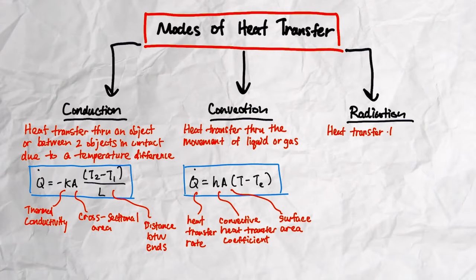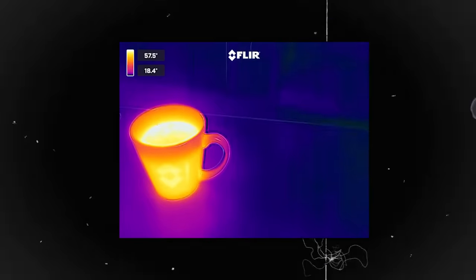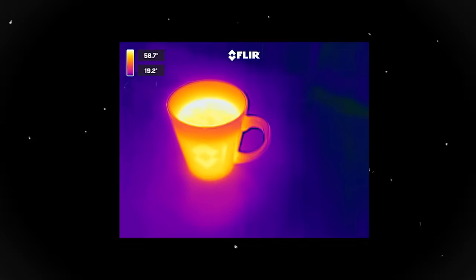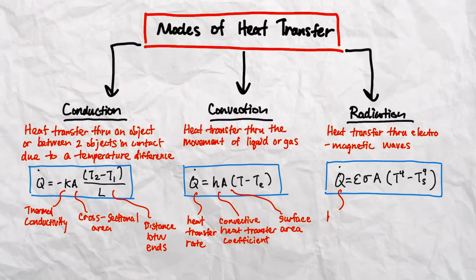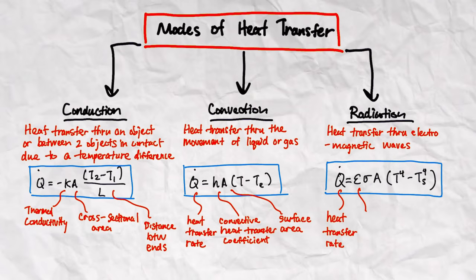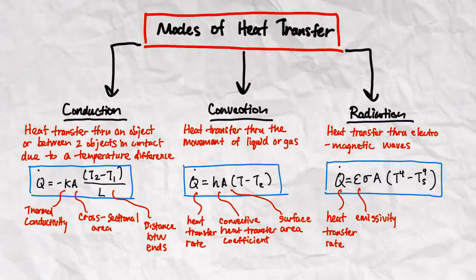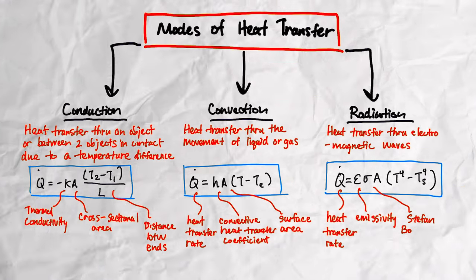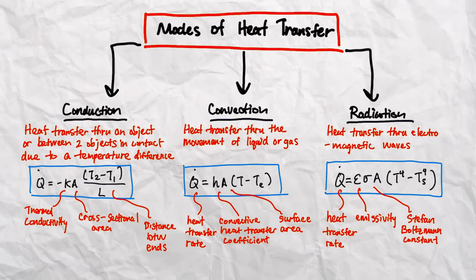Finally, radiation is when heat is transferred in the form of electromagnetic waves. All objects that you see emit thermal radiation, even if it doesn't feel warm. It can be represented by the Stefan Boltzmann law, where Q dot is the heat transfer rate. Epsilon is emissivity, which quantifies how effectively an object emits thermal radiation. Sigma is the Stefan Boltzmann constant. T is the temperature of the radiating surface, and TS is the surrounding temperature. An example is the sun heating up the earth or warming yourself up with an electric heater.